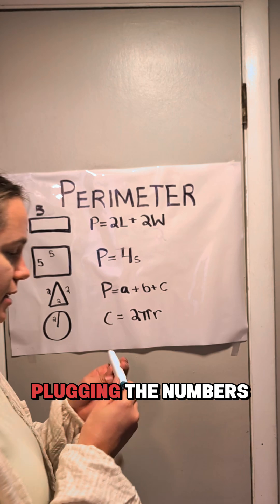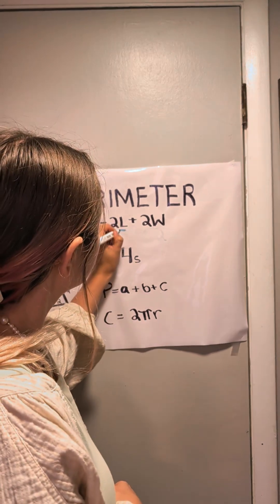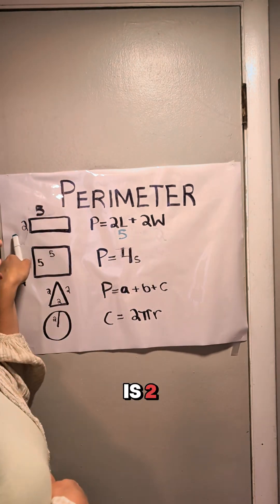So we're going to start by plugging the numbers in. The length is 5, and the width is 2.